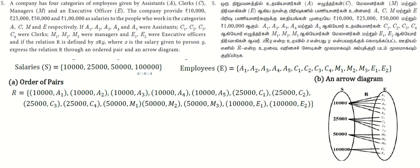Four categories are clear? Okay, that's the number of employees. The names are A1, A2, A3, A4, A5 as assistants. C1, C2, C3, C4 are clerks. M1, M2, M3 are managers. E1, E2 are executive officers.